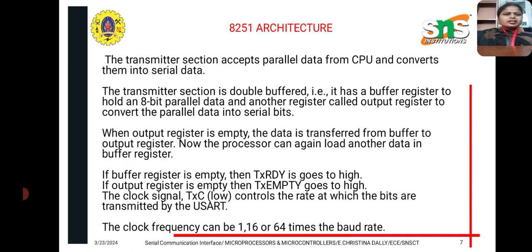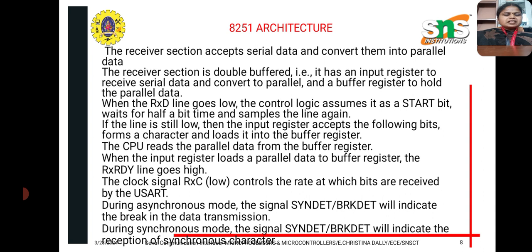The function of the transmitter is to accept parallel data from the CPU and convert it into serial data. The transmitter section is double buffered because it has a buffer register used to store data. If the output register is empty, data is transferred from the buffer register. If the buffer is empty, the transmitter ready line goes high. The clock frequency may be 8, 16, or 64.